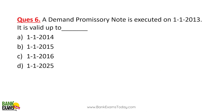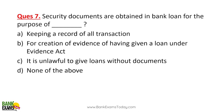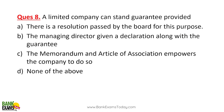A demand promissory note executed on 1st January 2013 is valid up to which date? It is valid up to 1st January 2016 — because a promissory note is valid for 3 years.